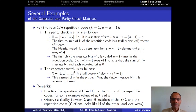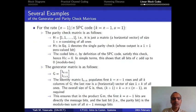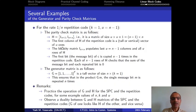There is also an interesting duality between G and H matrices. If you look at the H matrix for the repetition code — which has a vector full of ones followed by an identity matrix — it looks a lot like the G matrix for the SPC code, which also has an identity matrix and a vector of ones. On the other hand, if you look at the H matrix for the SPC code, it looks a lot like the G matrix for the repetition code.